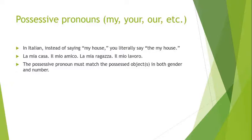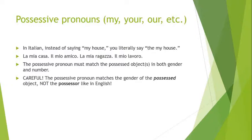The possessive pronoun must match the possessed object in both gender and number. I used 'la' for 'casa' because it's feminine singular, and 'il mio amico' because it's one masculine friend — masculine singular. It has to match the possessed object in both gender and number. This is a hurdle for a lot of English speakers coming to Italian.